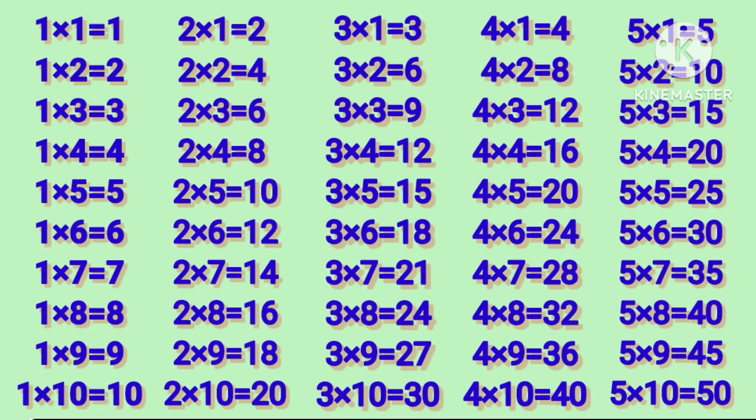5 ones are 5, 5 twos are 10, 5 threes are 15, 5 fours are 20, 5 fives are 25, 5 sixes are 30, 5 sevens are 35, 5 eights are 40, 5 nines are 45, 5 tens are 50.